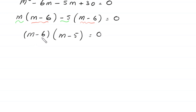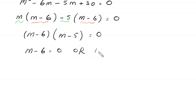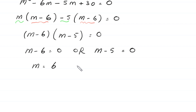From here, either m minus 6 is equal to 0, giving m equal to 6, or m minus 5 is equal to 0, giving m equal to 5.